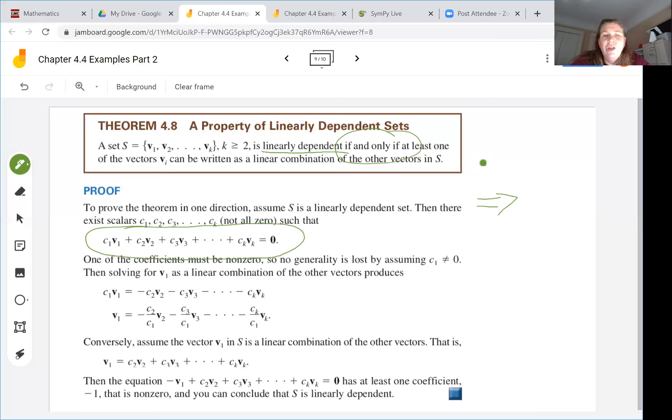Then if we rearrange and solve in terms of C1 V1 we get C1 V1 equals negative of all of the other components of this equation because we just bumped everything to the other side and we can divide everything through by C1.